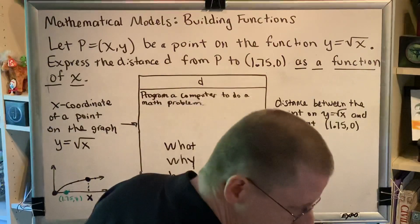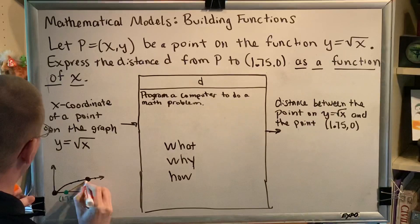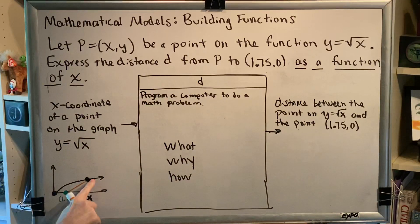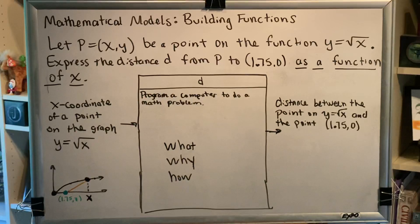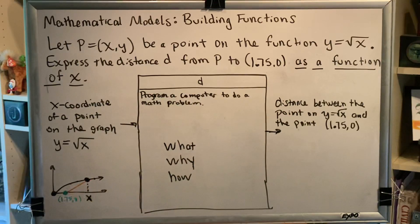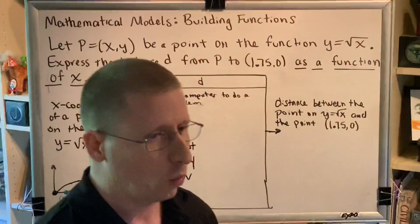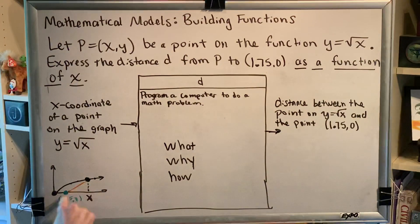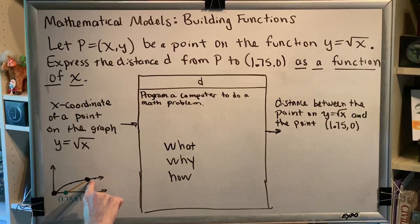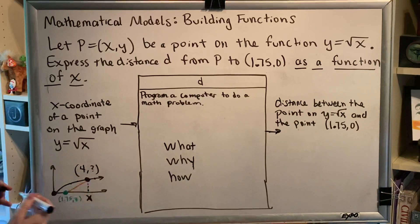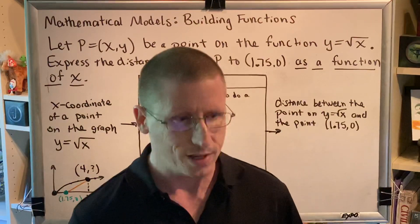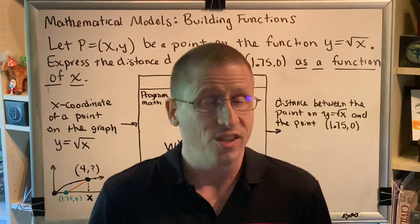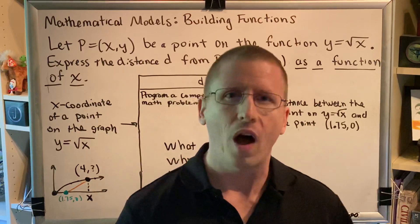I'm going to change the color of that connecting line to orange. So we're measuring the distance shown in orange from the black dot to the green dot. Now, hypothetically, let's say someone told you the x coordinate of this point was 4. If you wanted to figure out how far apart these two points were, you'd first need to determine the y coordinate that goes with x equals 4. Since this is the square root function, when x is 4, y is the square root of 4, which is 2.